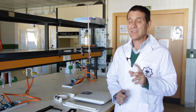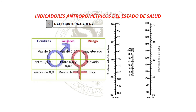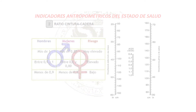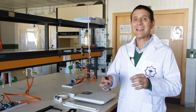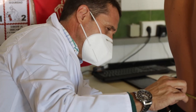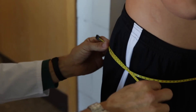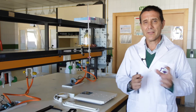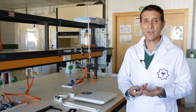El siguiente parámetro, muy interesante, es el índice cintura-cadera. Conviene hacer este estudio porque las personas que tienen un índice cintura-cadera descompensado, generalmente por encima de 1 en el caso del hombre y por encima de 0,85 en el caso de las mujeres, tienen obesidad abdominal, lo cual está correlacionado con muerte por patología cardiovascular. Lo que vamos a hacer es medir la cintura y la cadera de nuestro voluntario. Su cintura era de 77 centímetros y la cadera de 96, con lo que el índice cintura-cadera es 0,8. Por tanto, nuestro voluntario no sería una persona con riesgo de sufrir patología cardiovascular.